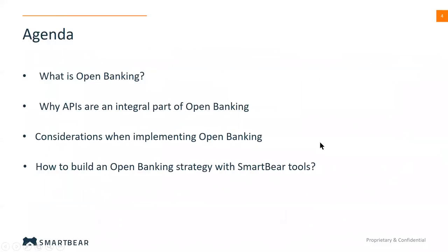On the agenda today, we'll start at a high level talking about open banking in general — what it is, what the motivations were for it, and why it's becoming a big part of the financial technology sector. Then we'll talk about how and why APIs are a big part of the open banking movement. We'll discuss some considerations and challenges when implementing an open banking application, and finally we'll get more practical and talk about how to build an open banking strategy using some SmartBear tools.